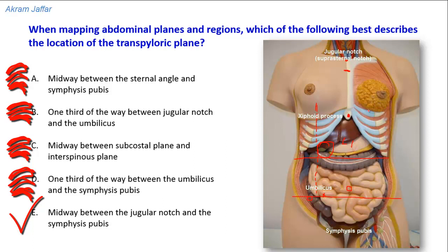The transpyloric plane is used together with another horizontal plane — the transtubercular plane — to divide the surface of the abdomen into the nine regions of the anterior abdominal wall: the right hypochondrium, right lumbar, umbilical, left lumbar, right inguinal, hypogastric, and left inguinal regions. The transpyloric plane is sometimes used interchangeably with the subcostal plane, although the subcostal plane is located at a lower level.